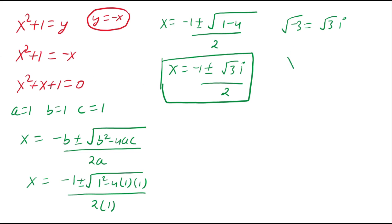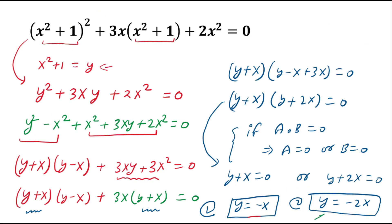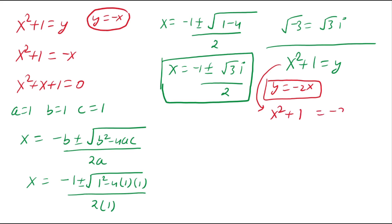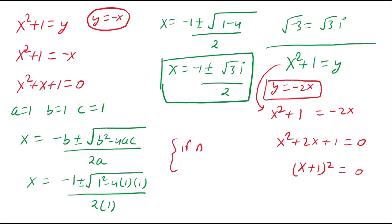In Case 2, y = -2x, so x² + 1 = -2x. Bringing all terms to one side gives x² + 2x + 1 = 0. The left-hand side is a perfect square: (x + 1)² = 0. Since a² = 0 implies a = 0, we get x + 1 = 0, so x = -1.